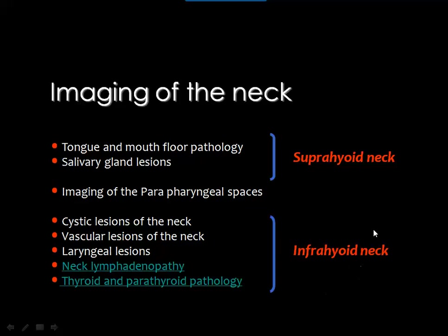Reviewing the anatomic divisions of the neck: in the suprahyoid neck we covered the tongue, mouth floor, salivary gland lesions, and parapharyngeal space. In the infrahyoid neck we covered cystic lesions, vascular pathology, and laryngeal imaging in the first part. Now we will discuss neck lymphadenopathy as well as thyroid and parathyroid pathology.